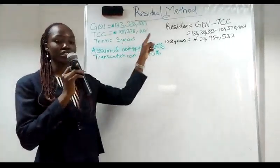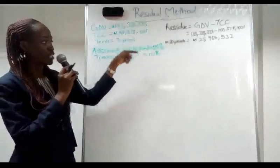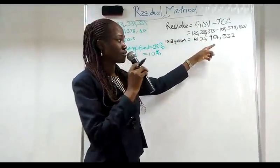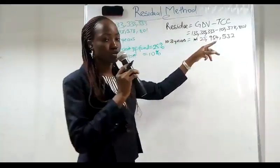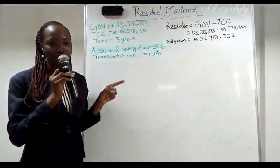Now to get residue is gross development value minus total cost of construction as written here. Our total residue now is 25,954,532 which is gotten in three years. Three years here represents our development period.